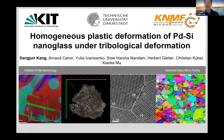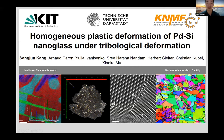Thank you for the introduction, and I would also like to thank the organizers for allowing us to present our recent research on nanoglass deformation. I'm Sangjung Kang from the Electron Microscopy Group at KIT, under the guidance of Professor Christian Kubel, and this work is also guided by Professor Herbert Gleiter. Today we will talk about the experimental observation of unique deformation behavior of nanoglass, which is clearly distinguished against conventional metallic glass.